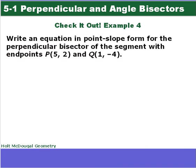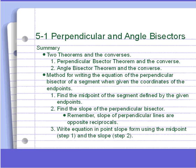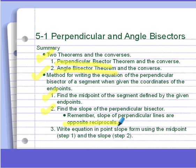Now you get to try — hopefully you wrote down those steps. Use those steps to find the equation for the perpendicular bisector in point-slope form for the given endpoints. To summarize: make sure you've got the perpendicular bisector theorem and its converse, and the angle bisector theorem and its converse written down. The steps for writing the equation of the perpendicular bisector are: find the midpoint of your segment, find the slope of your segment and take the opposite reciprocal for the perpendicular slope, then plug your slope and midpoint into point-slope form. Bring any questions you have to class.